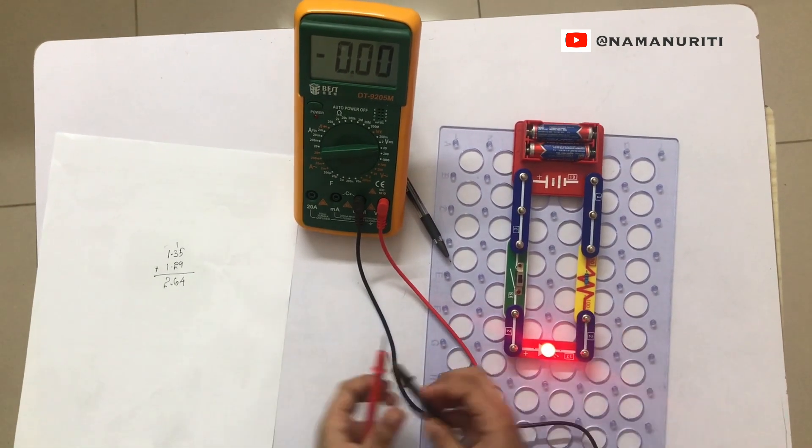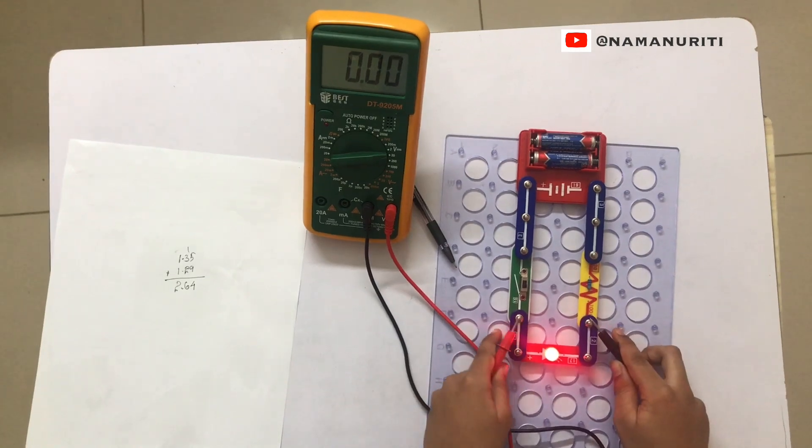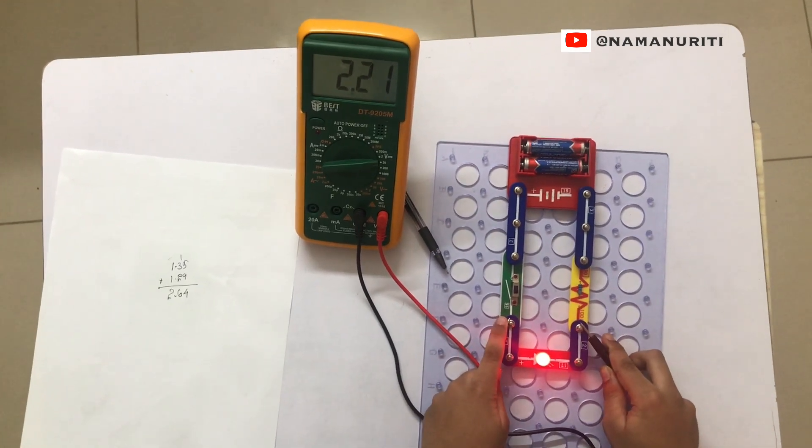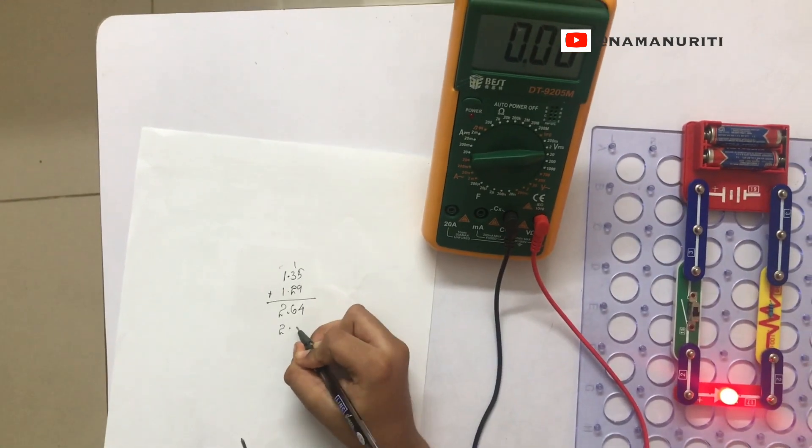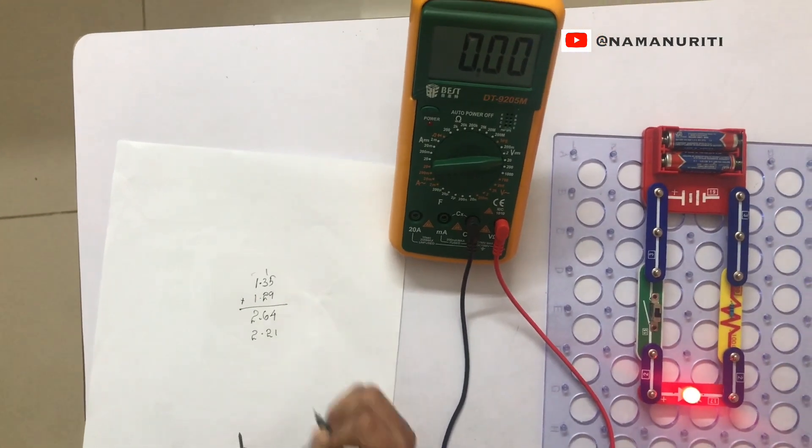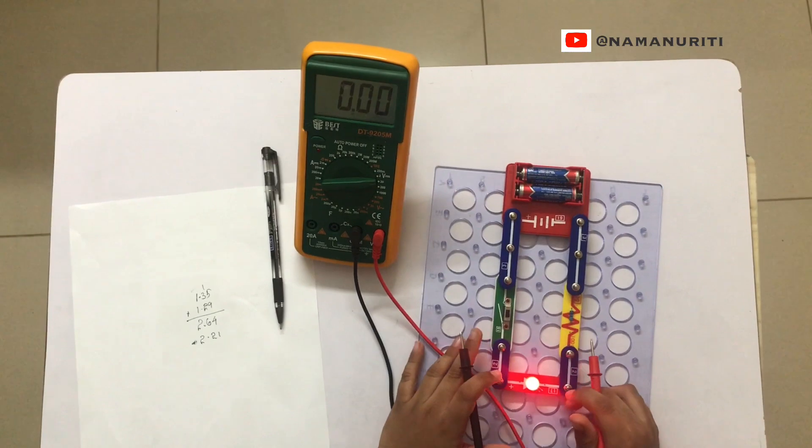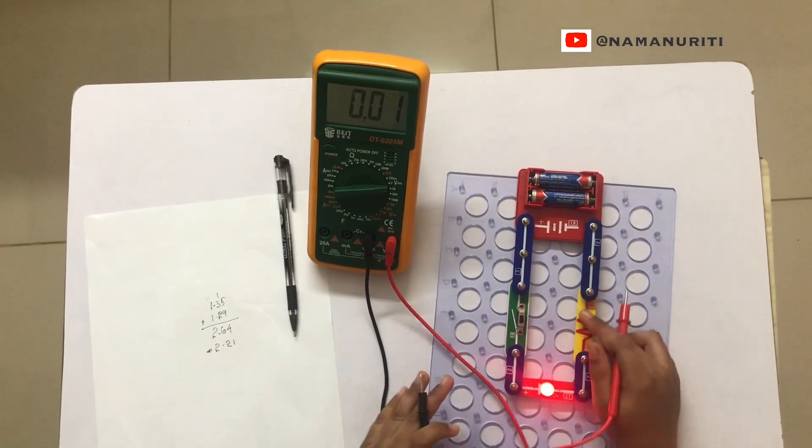What? It didn't come this time. 2.21. Hey, the voltage has dropped because of the resistance.